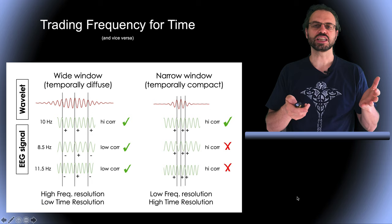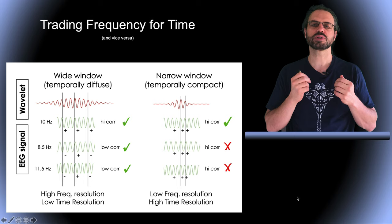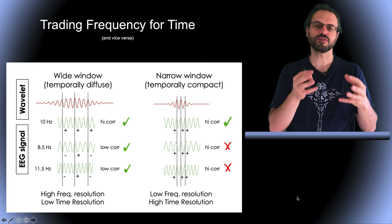Similarly, if the EEG frequency is at 11.5Hz, so slightly higher than the wavelet frequency, then the large window wavelet will indicate a low correlation at 10Hz, so good frequency resolution. However, the small window wavelet will produce high correlation, indicating poor frequency resolution.